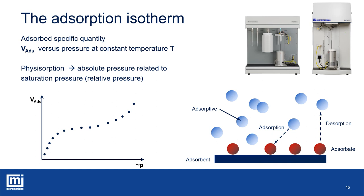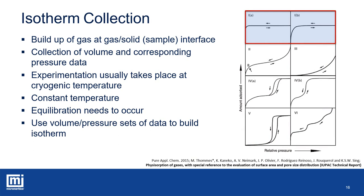In the IUPAC paper mentioned previously, we also find the classification of isotherm types and hysteresis loops — six typical isotherm shapes. For zeolites and activated carbons, we commonly observe the type 1 isotherm associated with microporous materials. Gas adsorption studies are typically carried out at cryogenic temperatures. At temperatures like room temperature, gas molecules have high kinetic energy — they move too fast. When approaching a flat solid surface, they might be trapped only for negligible time, so the amount adsorbed cannot conveniently be measured.